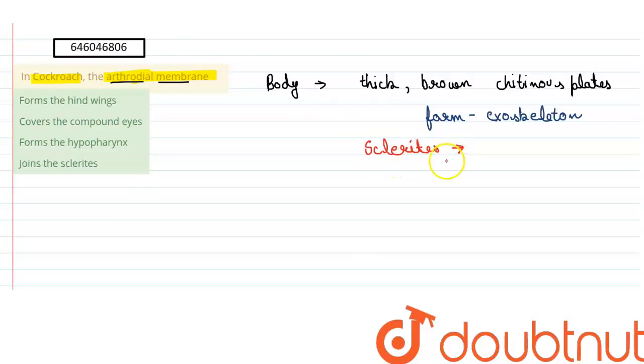Now the adjacent sclerites are joined by a thin and flexible membrane. The adjacent sclerites are joined with the help of a thin, flexible membrane, and this membrane is the arthrodial membrane.